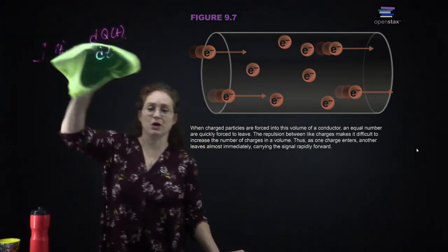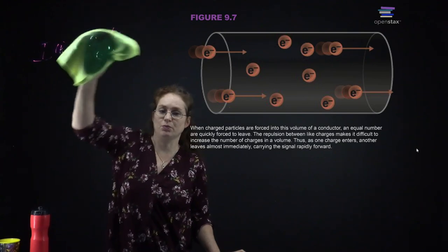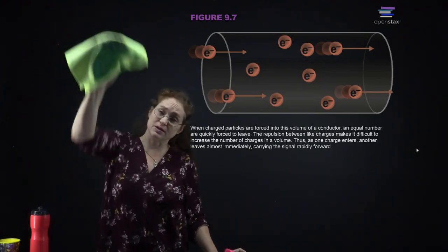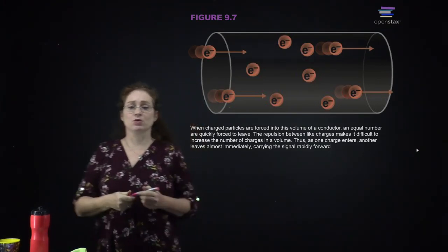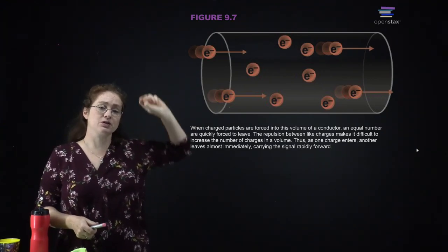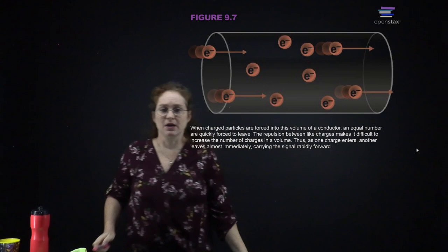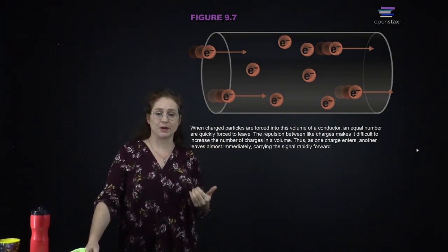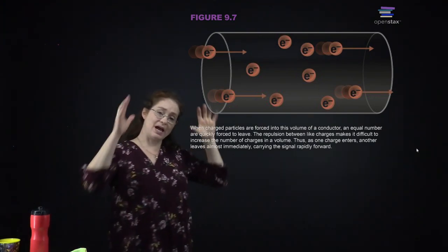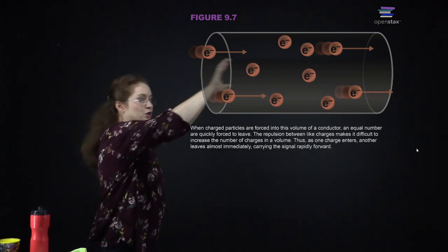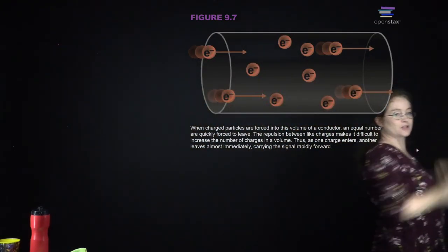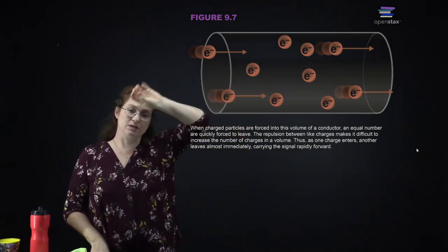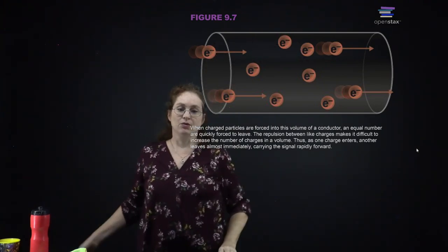When you force charged particles into a conductor — something where charges move easily — other charges come out the other side. This is because charges with the same sign repel each other. So what actually happens is you're pushing charges in on one end, and charges come out on the other end, transmitting the signal rapidly through the conductor.